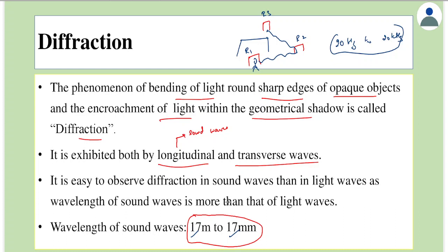Diffraction is not so common with light because to observe diffraction, the obstacle's dimension must be comparable to the wavelength of light. The wavelength of light is on the order of 2000 angstroms or 2 micrometers. For example, the wavelength of red color is around 6000 angstroms or 0.6 micrometers. So if objects are of that dimension, then you can observe diffraction.